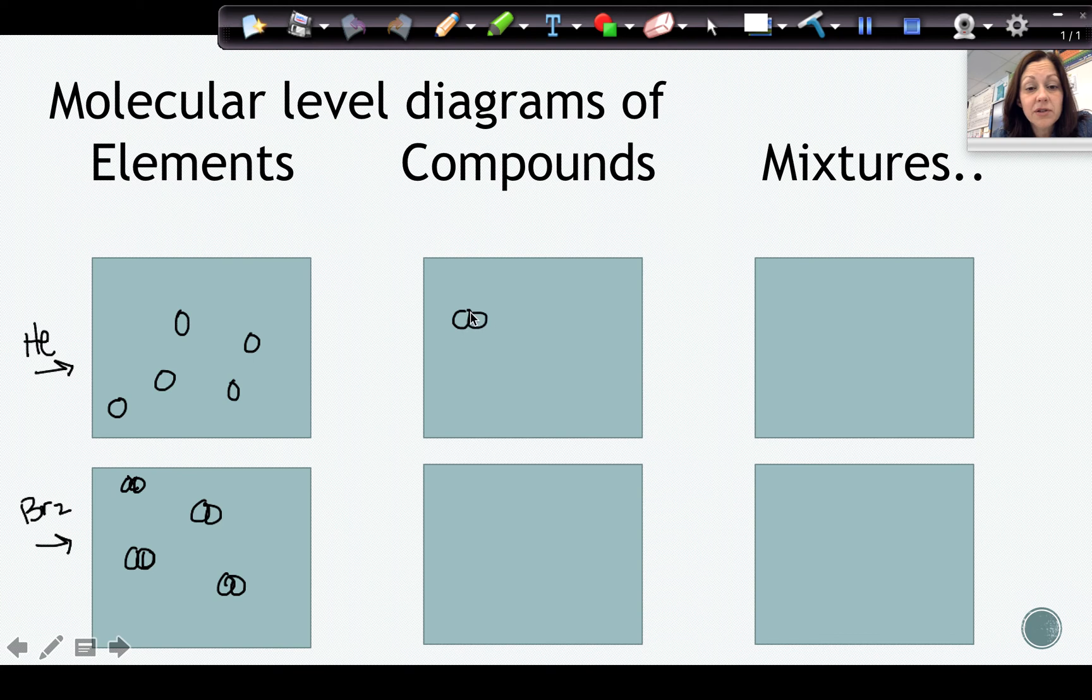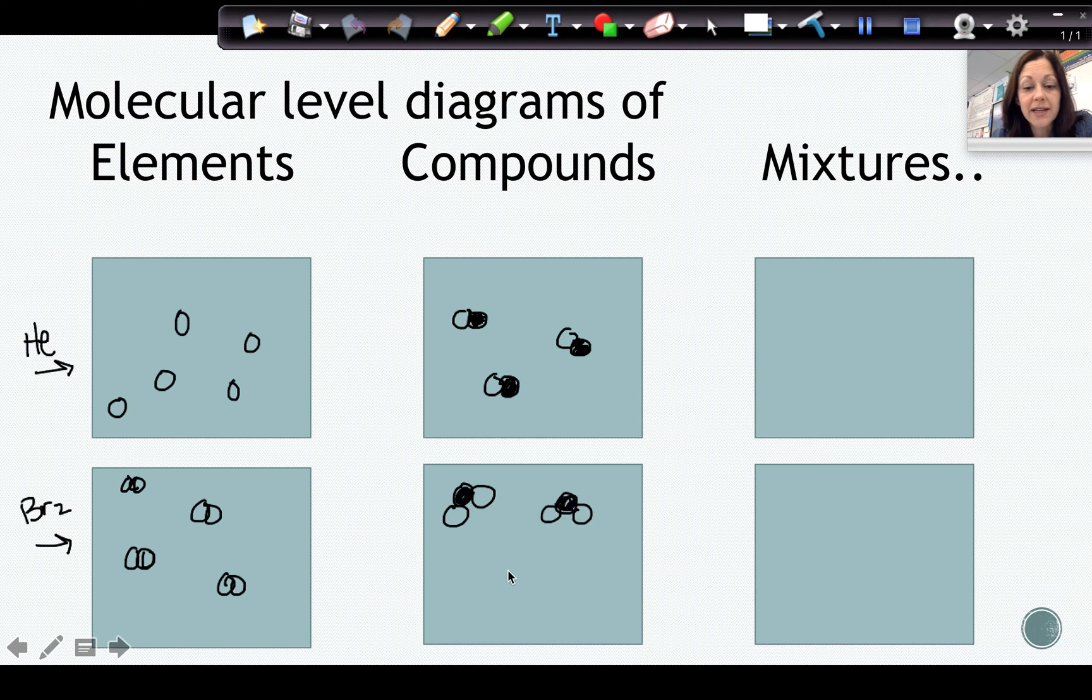Remember that a compound has to have at least two different types of atoms connected, and they're going to be connected in the same ratio and the same way every time. So this would be an example of a compound that had two elements per molecule. You can also change the ratio, which would change which compound you have. So this would be an example of a different compound, whereas in this one we have a one-to-one ratio.